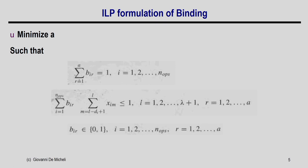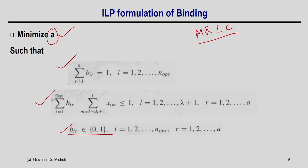If A is unknown — minimizing resources under latency-constrained scheduling — the objective function is: minimize A, subject to unique binding and the conflict constraints, where BIR is a Boolean variable. The ILP solver gives the BIR values that achieve the minimum A.